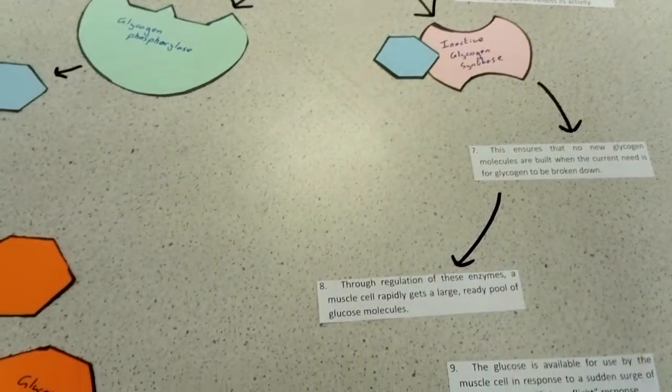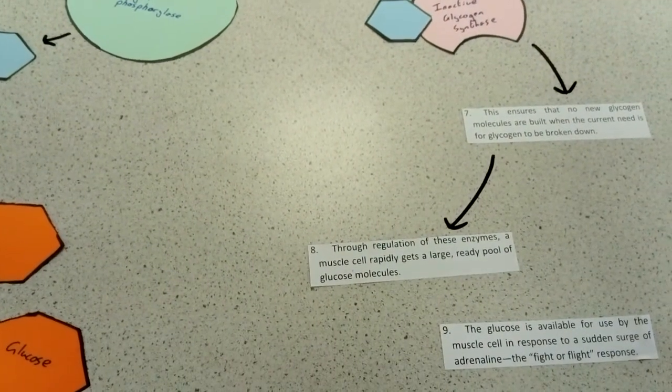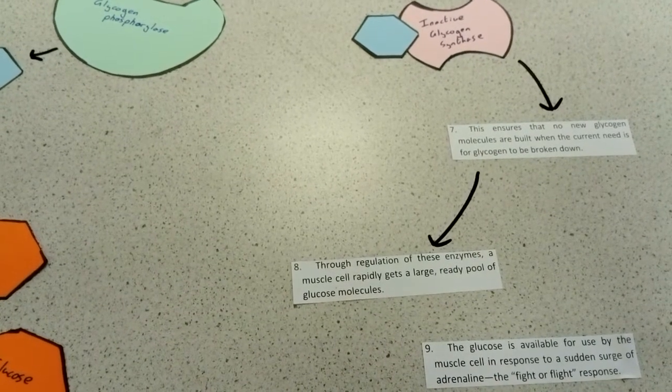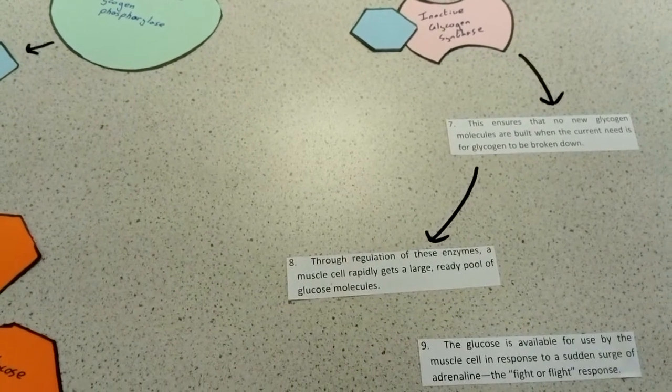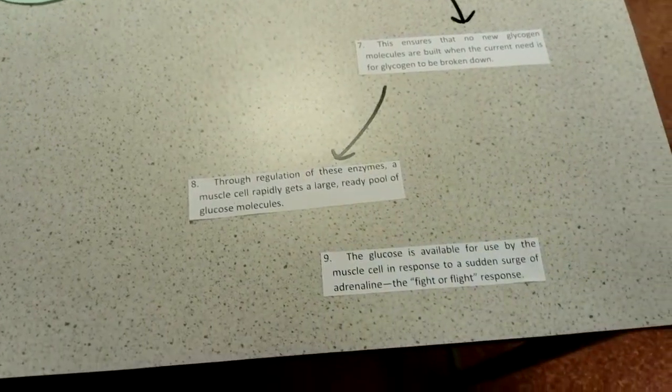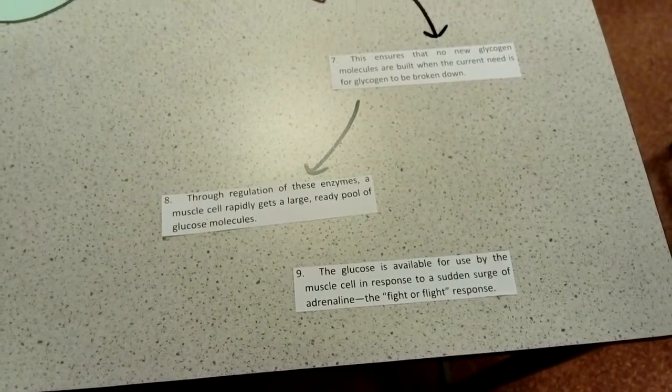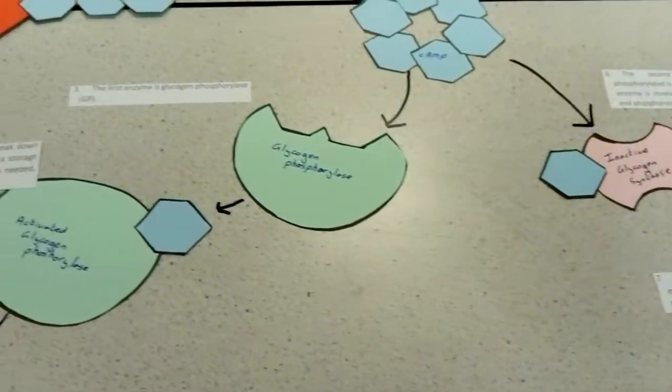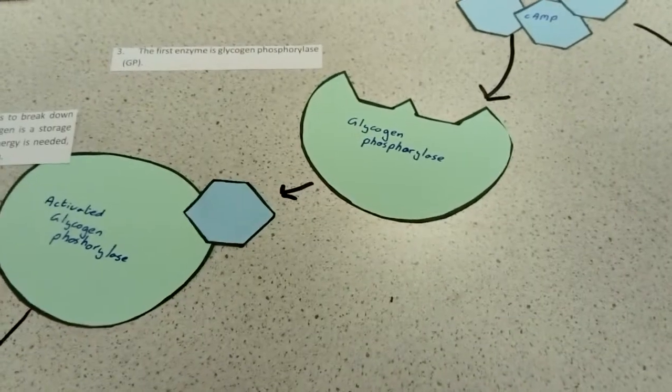Through the regulation of these enzymes, muscle cells can rapidly break down lots of glycogen to produce glucose, which can then be used for respiration in terms of what it will be used for within the fight or flight response of the cell.